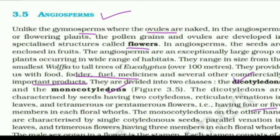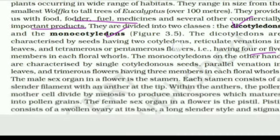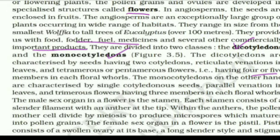Monocotyledons on the other hand are characterized by single cotyledon seeds. They have parallel venation in leaves — as opposed to reticulate venation in dicots — and trimerous flowers, having three members in each floral whorl.